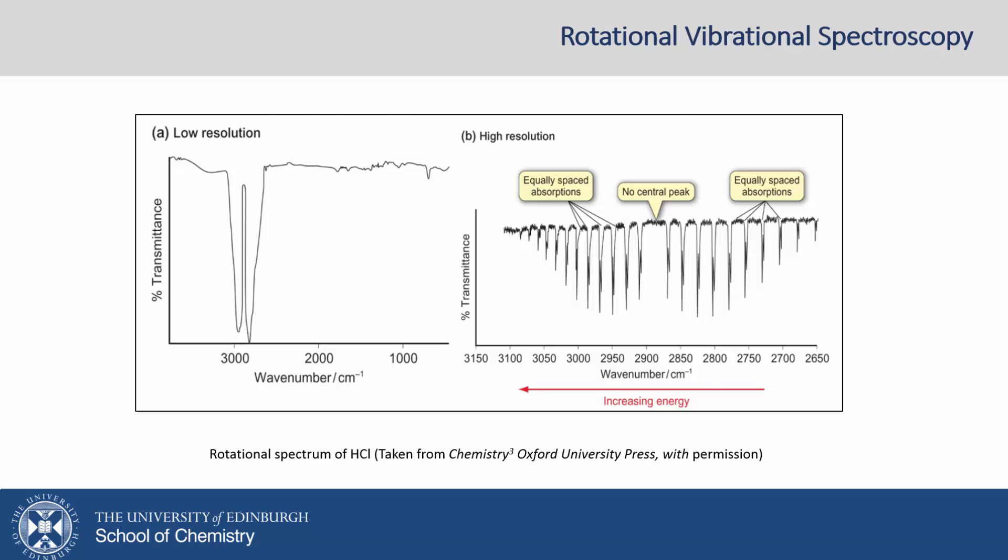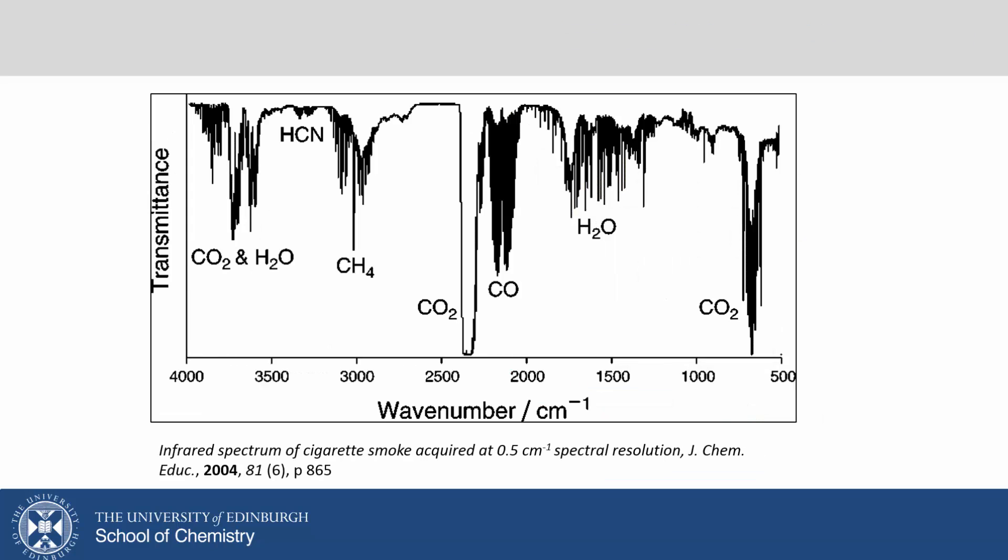We'll be looking at single molecules, but there are lots of applications. Here is a spectrum of cigarette smoke. We can use this to easily identify many nasty and toxic compounds in cigarette smoke. This approach is also used to study interstellar gases. It is so sensitive we can detect very small amounts and hence deduce their composition.